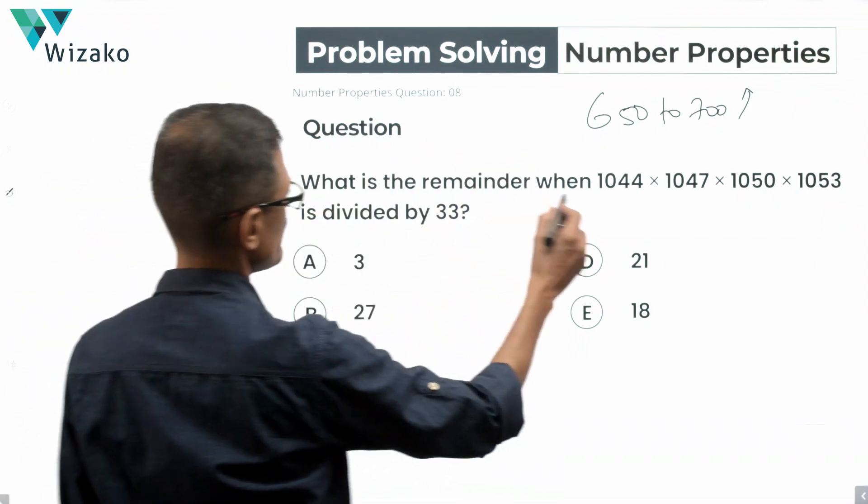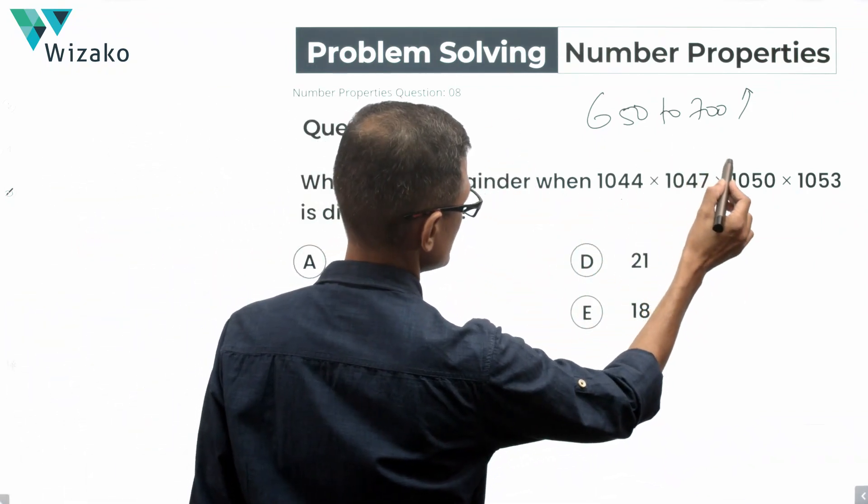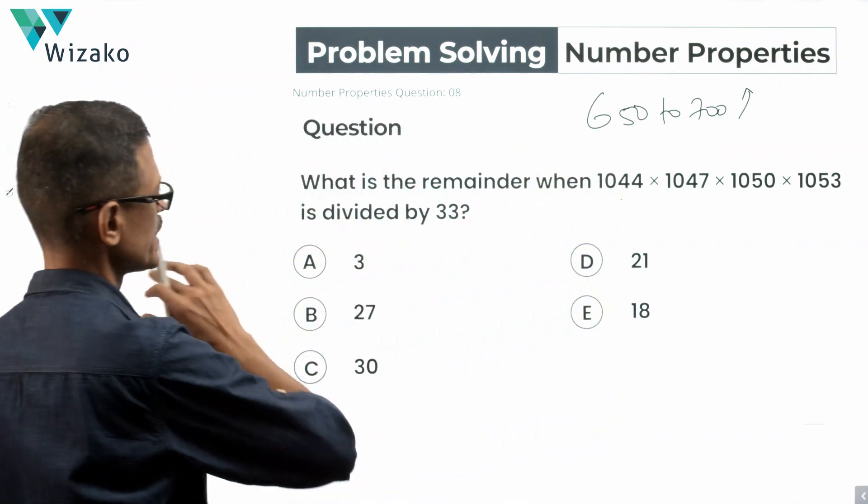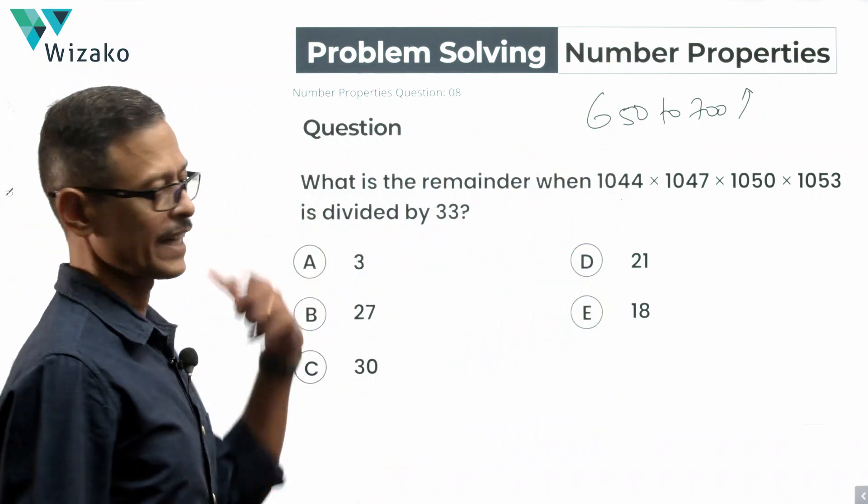What is the remainder when 1044 times 1047 times 1050 times 1053, this product, is divided by 33?